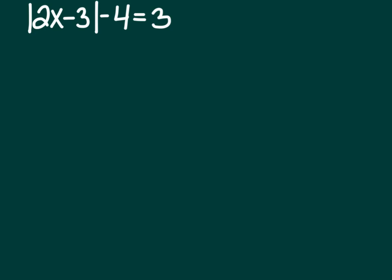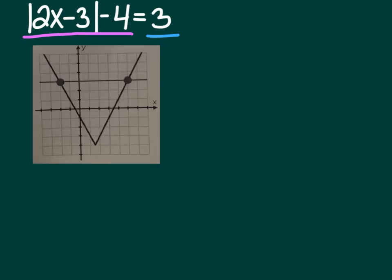Now I'll prove it graphically. We graph the absolute value of 2x minus 3 minus 4, and separately graph y equals 3, and find the intersections. The intersections are at x equals 5 and x equals negative 2, confirming our answers.